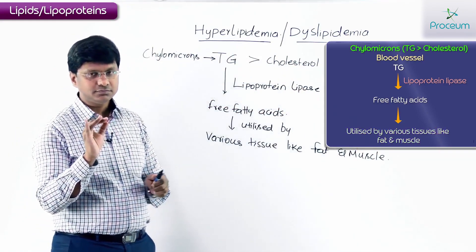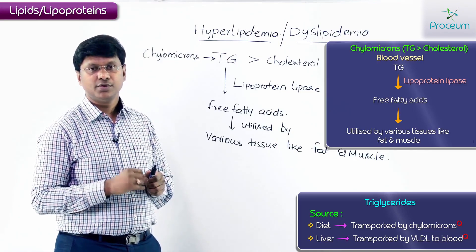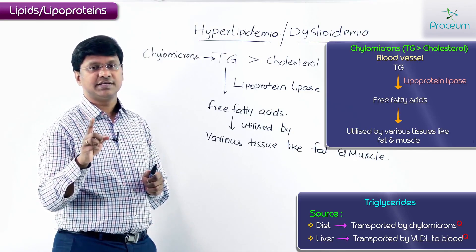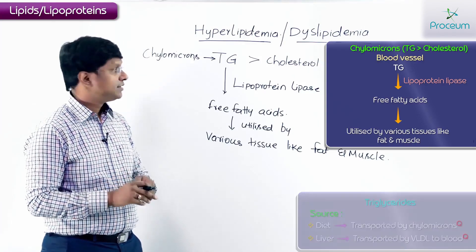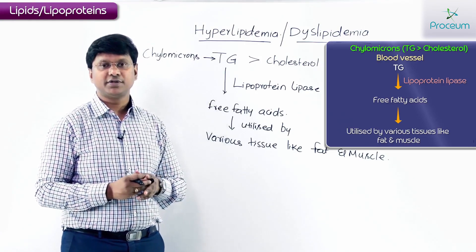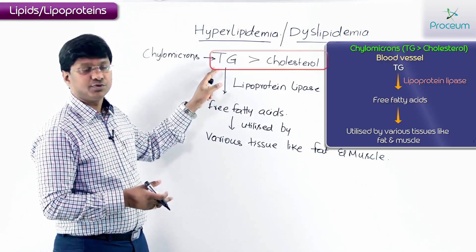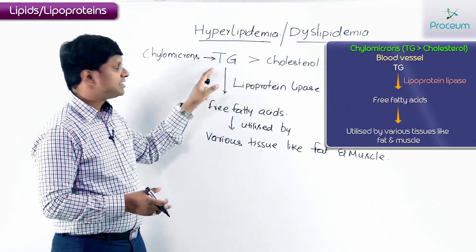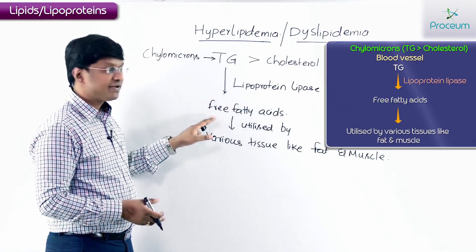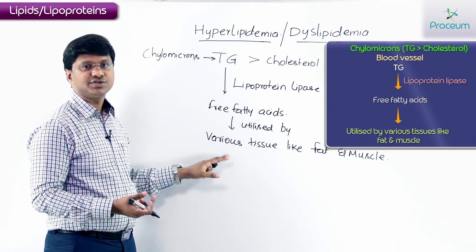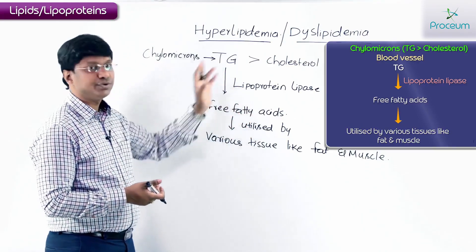To recap: the triglycerides taken through the diet are transported by chylomicrons, whereas the endogenous triglycerides synthesized in the liver are transported by the lipoprotein VLDL. Chylomicrons contain more triglycerides than cholesterol. These triglycerides are metabolized by lipoprotein lipase into free fatty acids, which are utilized by various tissues like fat and muscle.